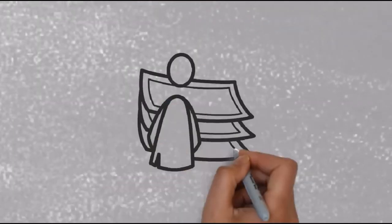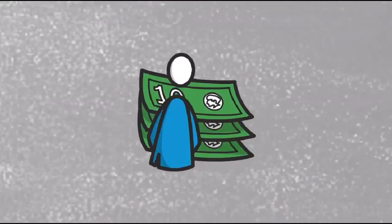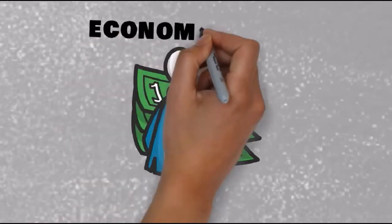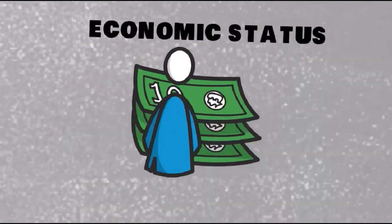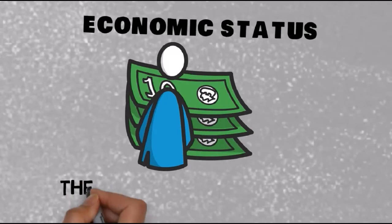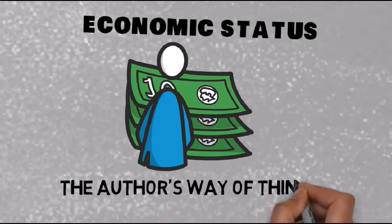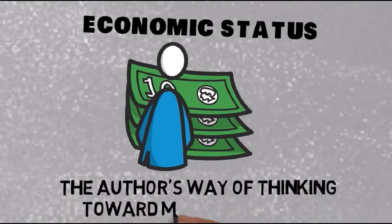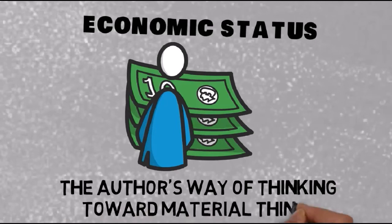Now let's see the third element, which relates to the author's economic status. The author's condition affects his way of thinking toward material things. If the author has everything — like money, or being rich — it is easy for him to write a story of a rich, successful person. And if he comes from a poor background, it is not difficult to write about poverty.